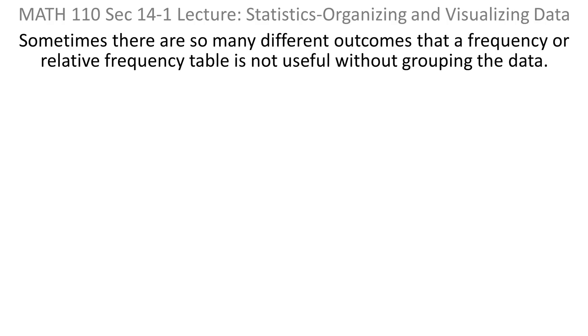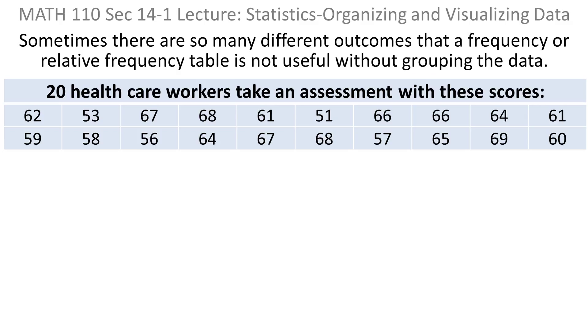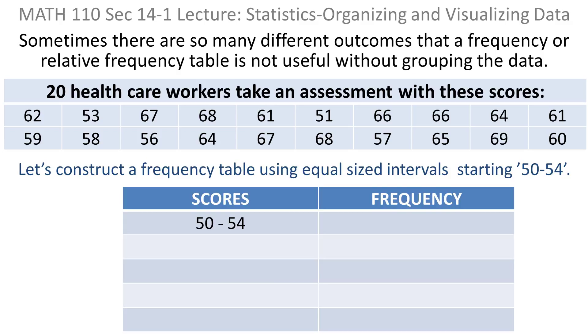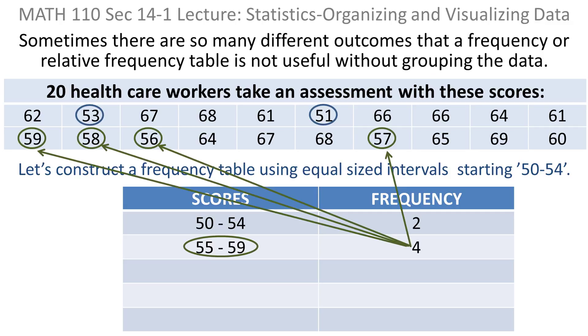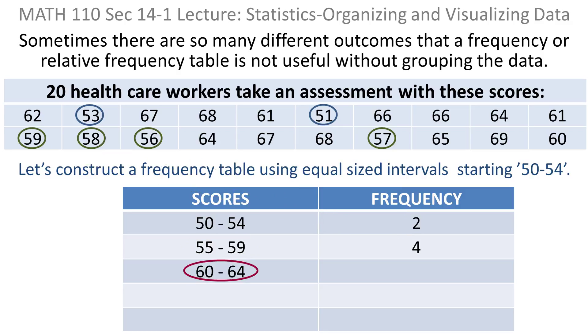Sometimes there are so many different outcomes that a frequency or relative frequency table is not very useful if you don't group the data. If I take this example of 20 healthcare workers and their scores on an assessment test, it would be very difficult to make much out of a frequency table with 20 rows. So what you might do instead is group them into intervals. I know there's nothing below 50 in that table, so I might go from 50 to 54 and go up by fours until I've covered everything. If I start with 50 to 54, I simply count how many assessment scores lie in that interval. There are only two. The next interval, 55 to 59, has four.